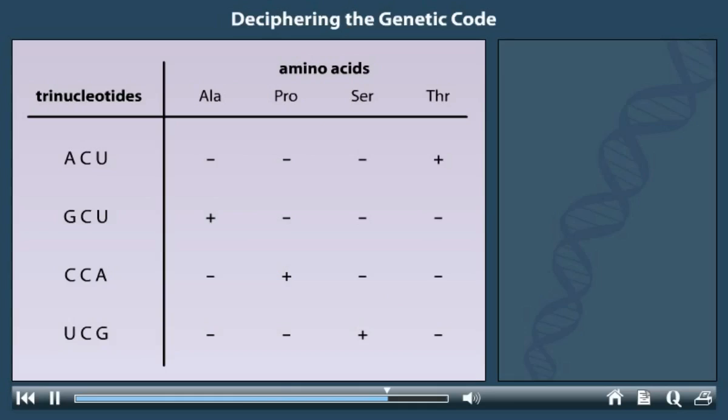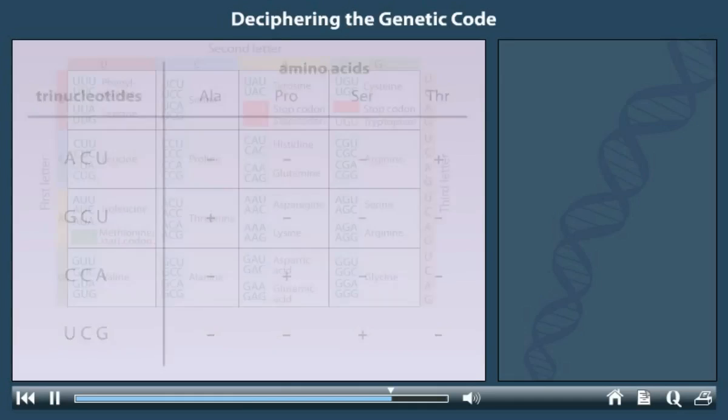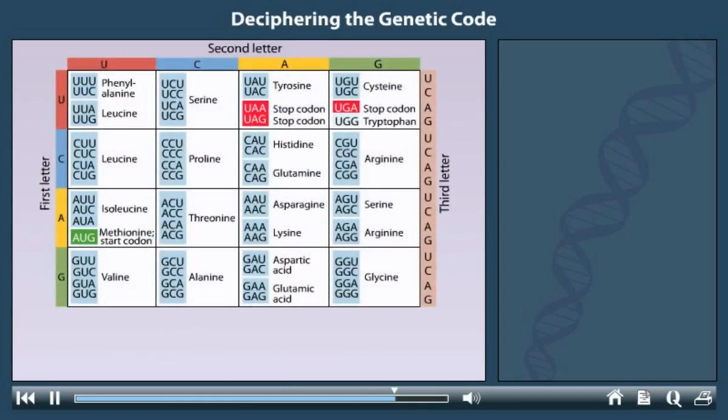From such experiments, we know the genetic code, which consists of 64 codons. Here is the complete code. Each codon specifies an amino acid, with the exception of three stop codons. When a ribosome encounters a stop codon, no tRNA will bind to the codon, and protein synthesis terminates. Another codon, called a start codon, is unique because it is always found at the beginning of a protein coding sequence in mRNA.